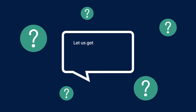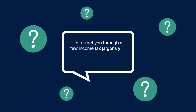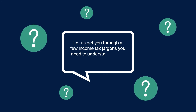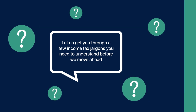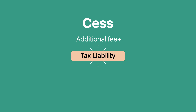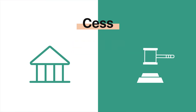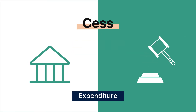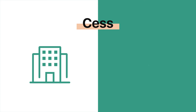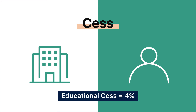Let us get you through a few income tax jargons you need to understand before we move ahead. Cess is an additional levy on the tax liability. The government resorts to imposition of cess for meeting specific expenditure. For instance, both corporate and individual income is at present subject to an education cess of 4%.